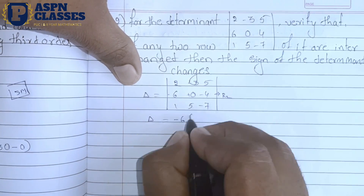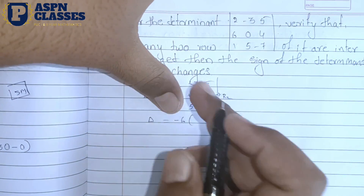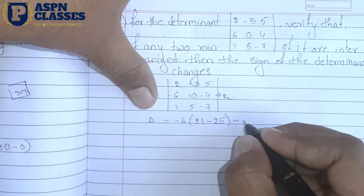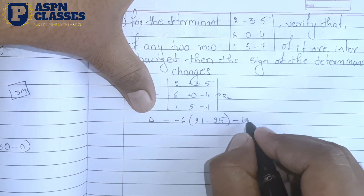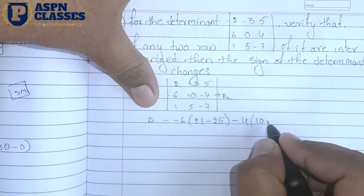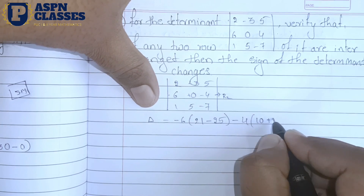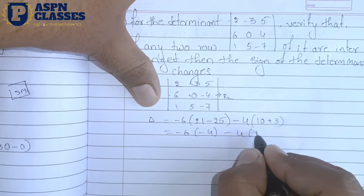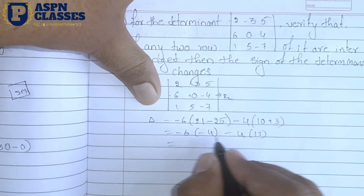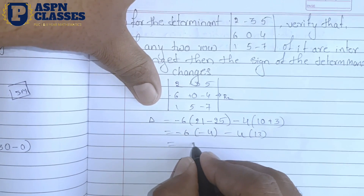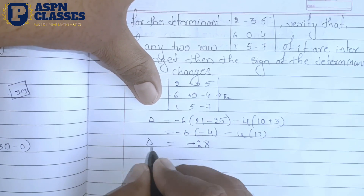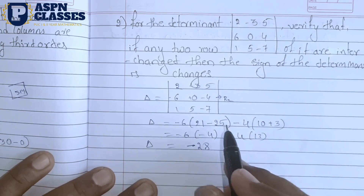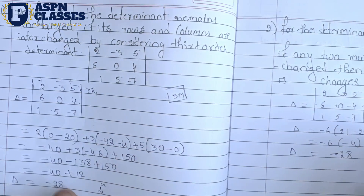The result is minus 4. Minus 4, minus 4, minus 4 — this result will cancel. This is 10. This is plus 3. So minus 6, this is minus 4, minus 4. Calculating the total: this is 24 and this is 52, then it will be minus 28. So this is minus 28 answer.